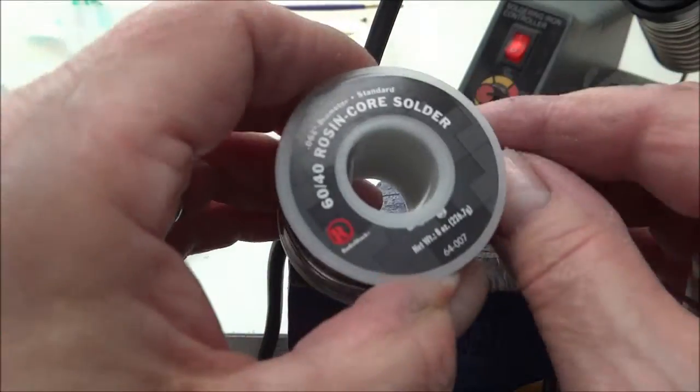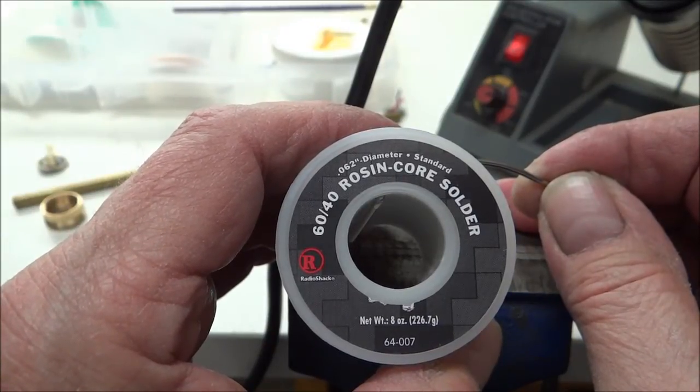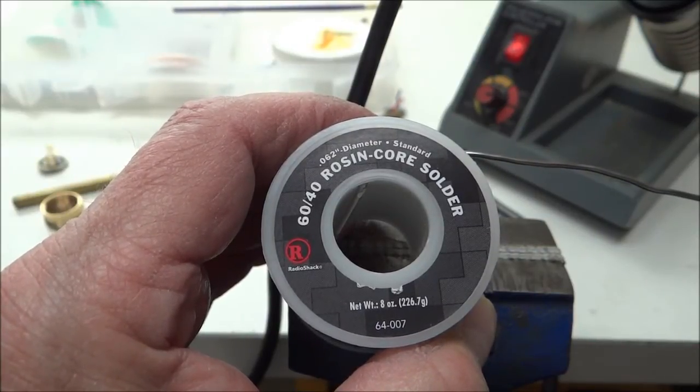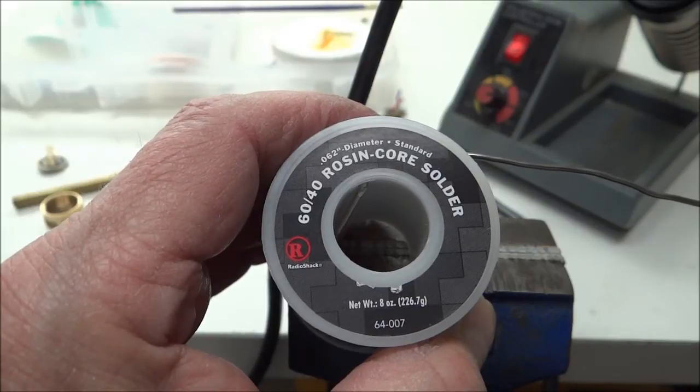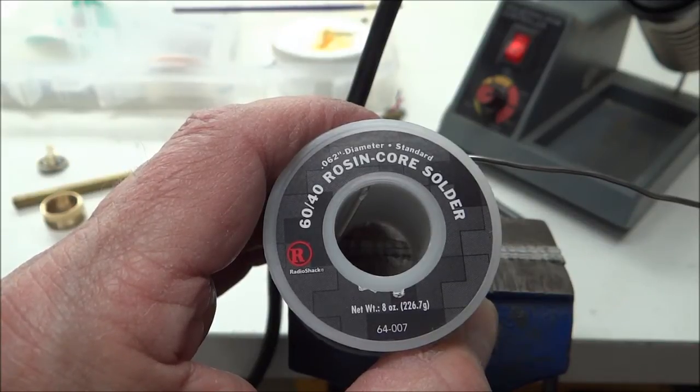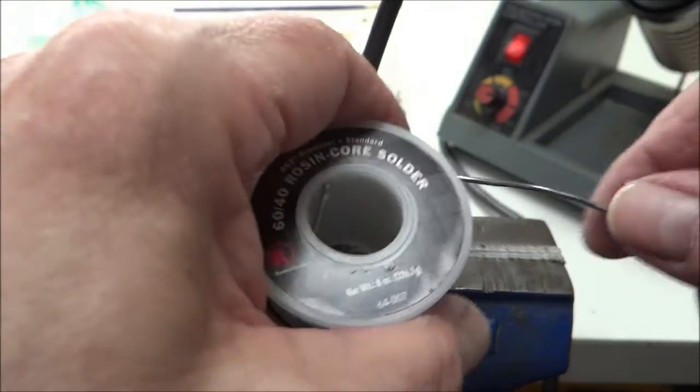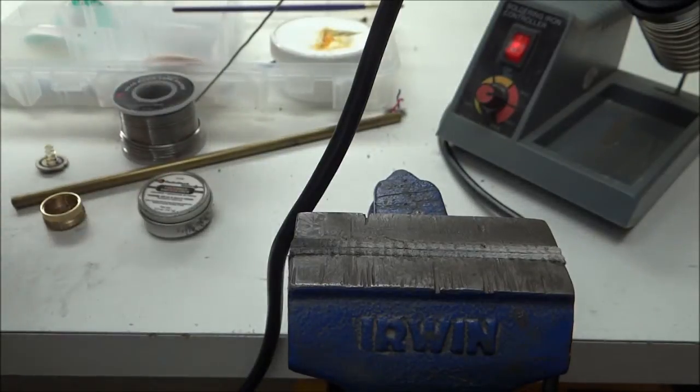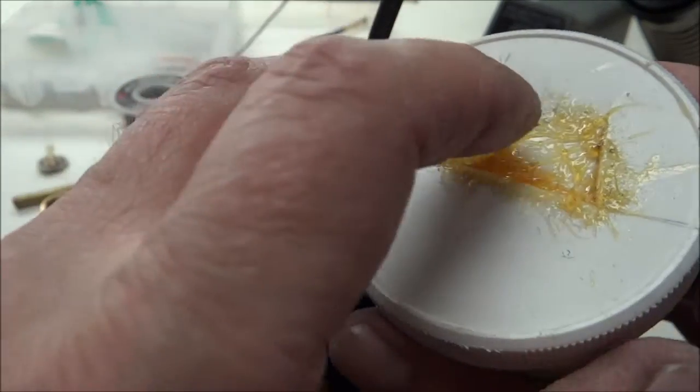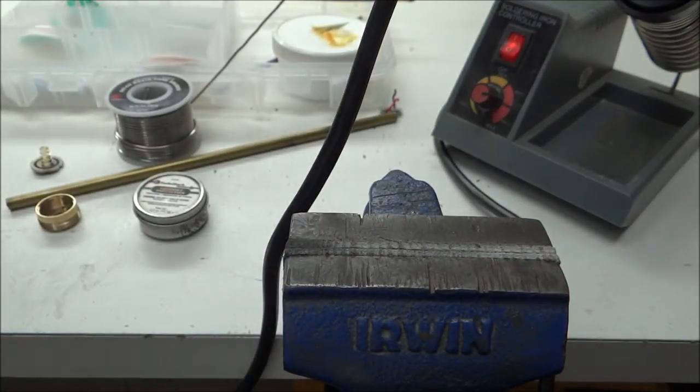First of all, the solder that I use is 60-40 rosin core solder. This solder has lead in it. I'm well aware of the problems that lead has in solder and also the smell it makes. But I use it because it flows so easily compared to anything else that I've ever used. It just makes you look like you're smart.